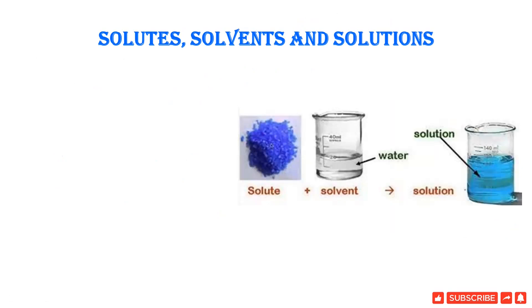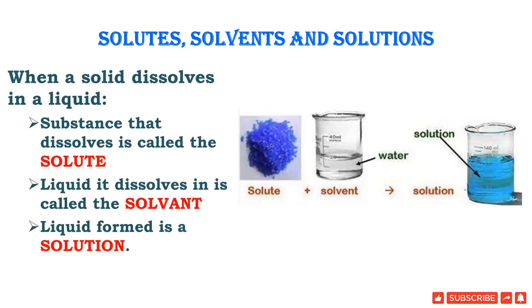A solution has two parts. One part is solute, which could be liquid, gas, or solid. Most often water is the solvent, but there are other solvents which can mix solutes to make a solution. When a solid dissolves in a liquid, the substance that dissolves is called solute. The liquid it dissolves in is called solvent.